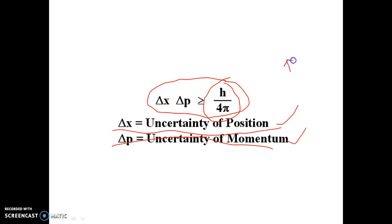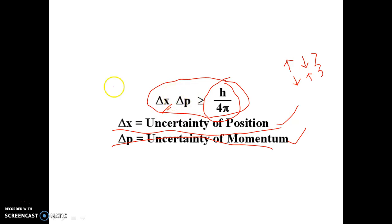So ΔX × ΔP is constant. Suppose ΔX increases, ΔP will decrease. And suppose ΔX decreases, ΔP will increase. Both factors cannot increase simultaneously — if one factor increases, the other decreases such that their product remains constant. Similarly, we can make an analogy between this and the gain bandwidth product.